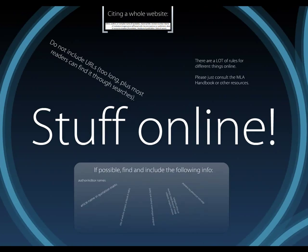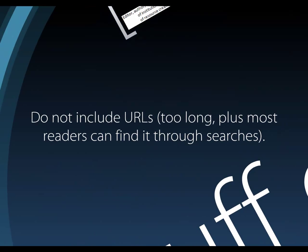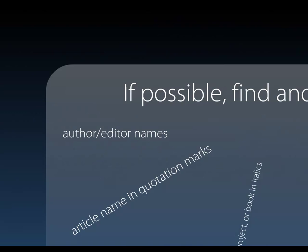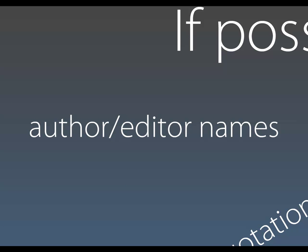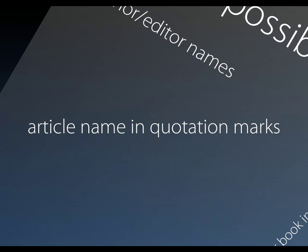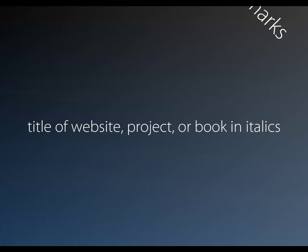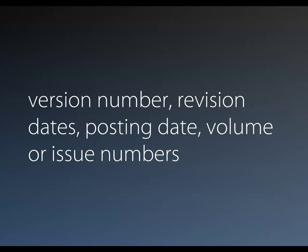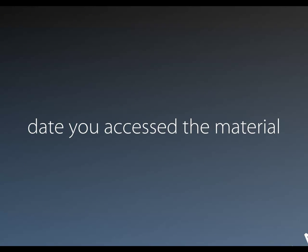If you are citing from material found online, there are different rules. Make sure you're not including the URL in your citations or Works Cited list, as URLs tend to be too long and most people can find what you're citing with just a few pieces of basic information. The information you'll want to include, if possible, is: the author or editor names, the article name in quotation marks, the name of the website, project, or book in italics, the publisher information including name and date of publication, the version number, revision dates, posting date, volume or issue numbers if available, and the date that you accessed the material.